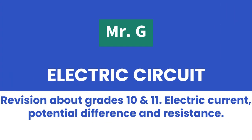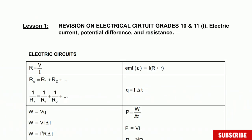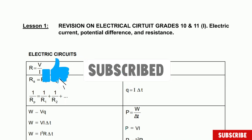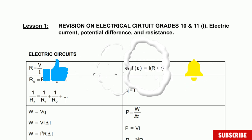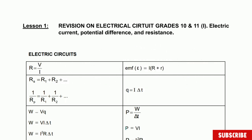Well hello guys, here Mr. G with another video for the grade 12. We're going to start with the lessons on electric current for grade 12 — it's one of the topics in term 3. The first thing we're going to be doing is revising some important concepts done in grade 10 and 11. We're going to focus on electric current, potential difference, and resistance. This will be brief, only recalling what we've done in previous grades.